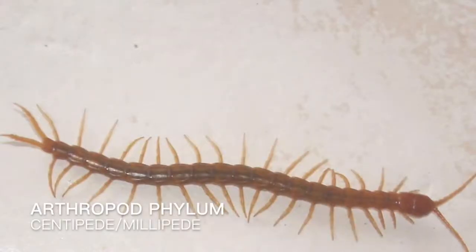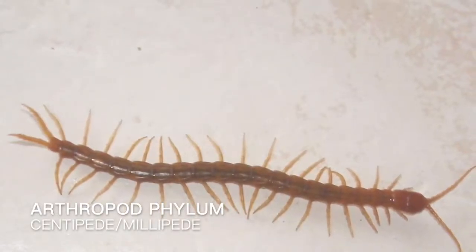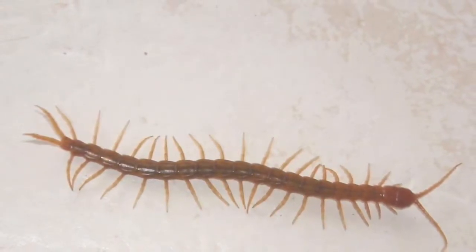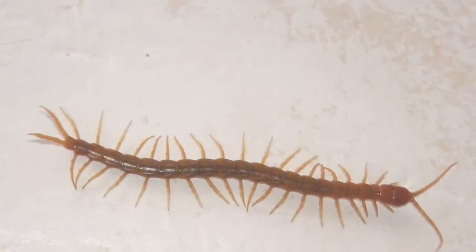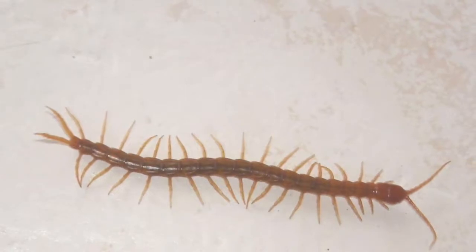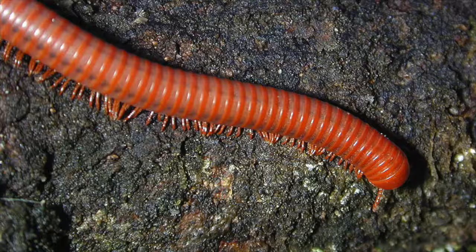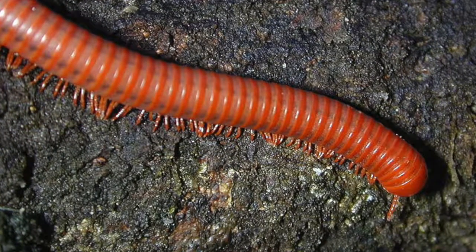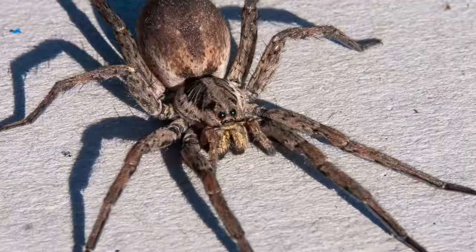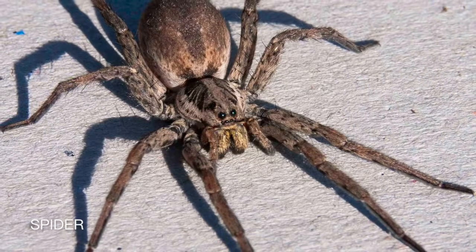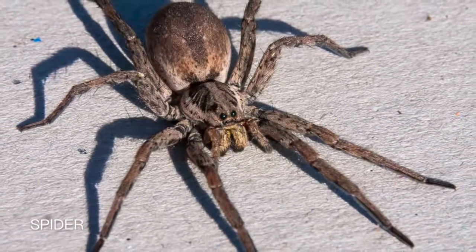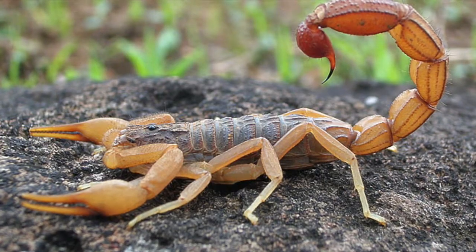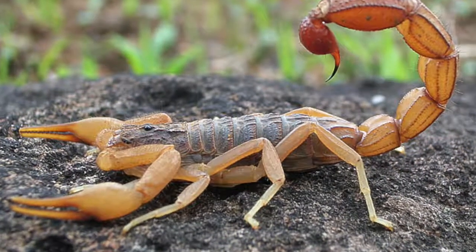Then, Arthropoda phylum, which has 4 groups. Centipede. Millipede. Arachnid class, like spider. Scorpion.